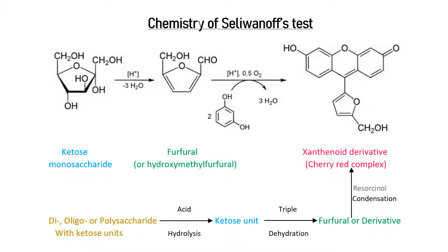Each furfural unit or furan derivative then reacts with two parts of resorcinol in a series of condensation reactions to finally yield a deep cherry-red xanthenoid condensation product. In the case of disaccharide and polysaccharide sugars containing ketose monosaccharide units, they first undergo acid hydrolysis to yield monosaccharide ketose units, which then undergo a series of dehydration and condensation to finally yield the colored product, just as in ketose monosaccharides.